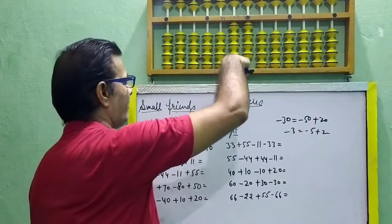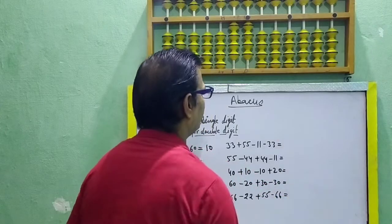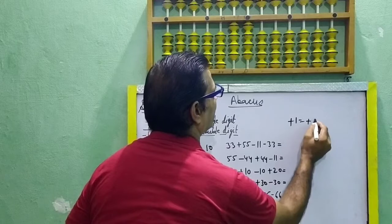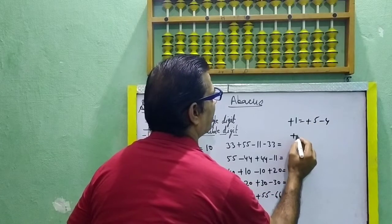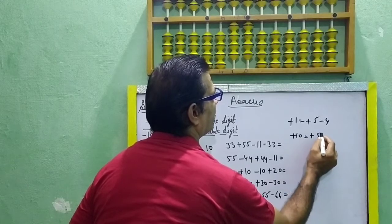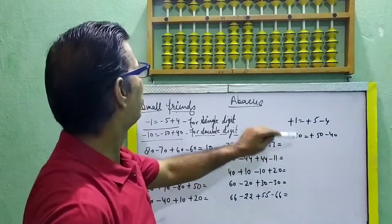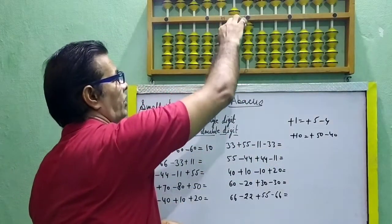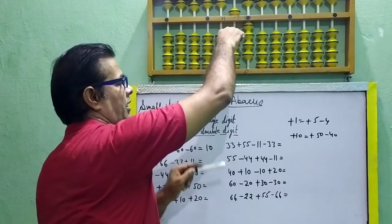Next: 11. Plus 1 — plus 1 is equal to plus 5 minus 4 for single digit. And then double digit: plus 10 is equal to plus 50 minus 40. For double digit: plus 50 minus 40.